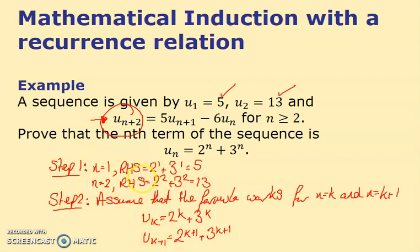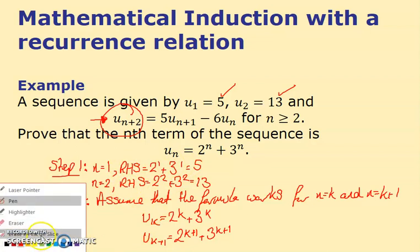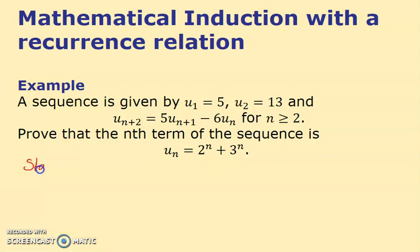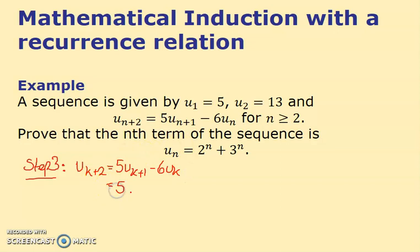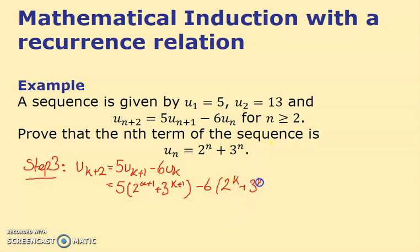Both of these assumptions must hold. Now we do step 3. We go back to the recurrence formula and say u_(k+2) = 5·u_(k+1) − 6·u_k. We've assumed that u_(k+1) = 2^(k+1) + 3^(k+1), so substituting in, we get 5·(2^(k+1) + 3^(k+1)) minus 6·(2^k + 3^k).